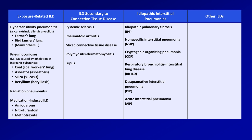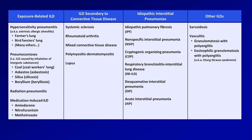The last category is the miscellaneous one. Here we have sarcoidosis; vasculitis — two in particular: granulomatosis with polyangiitis, and the very similarly named eosinophilic granulomatosis with polyangiitis, also known as Churg-Strauss syndrome; eosinophilic pneumonia, which has both acute and chronic forms (some classification systems leave this one out); and lastly, pulmonary Langerhans cell histiocytosis.